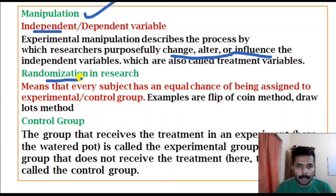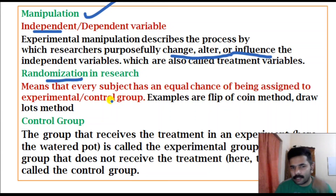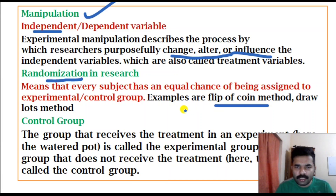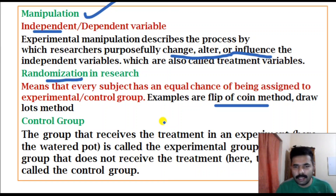Randomization in research means that every subject has an equal chance of being assigned to the experimental or control group. Examples include the flip of a coin method and the draw lots method. The lottery method is the randomization method — these are all examples of randomization.